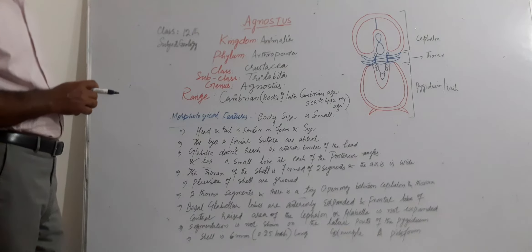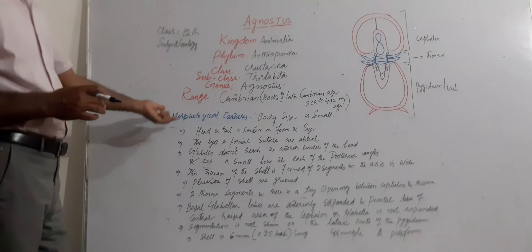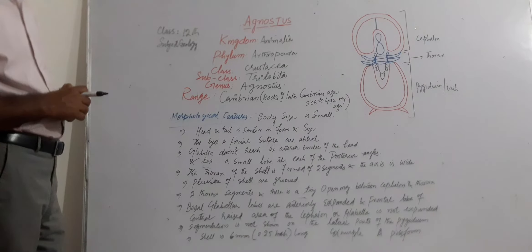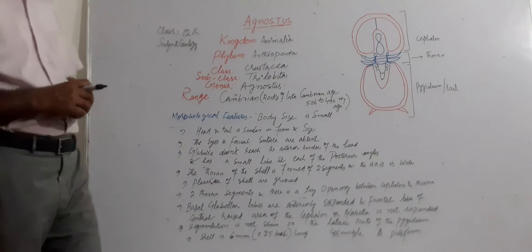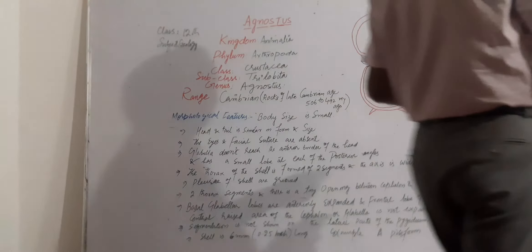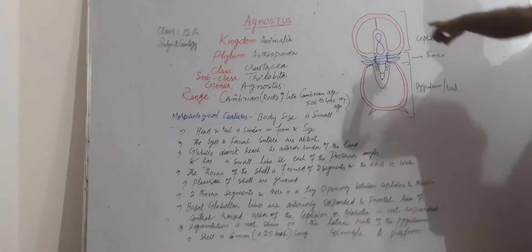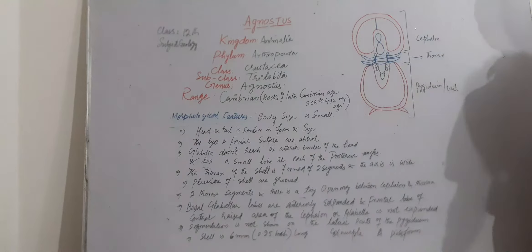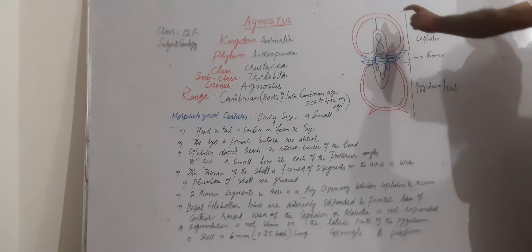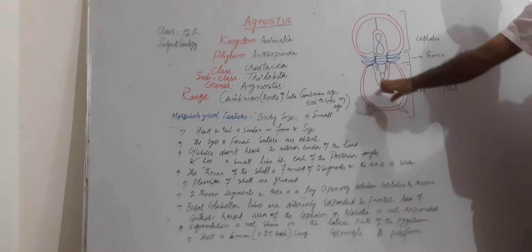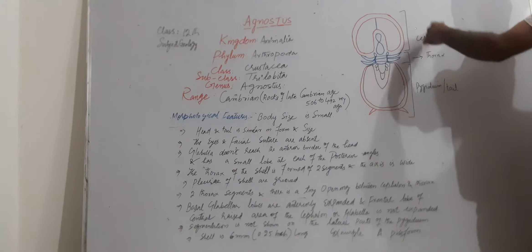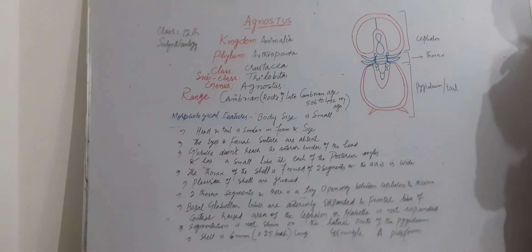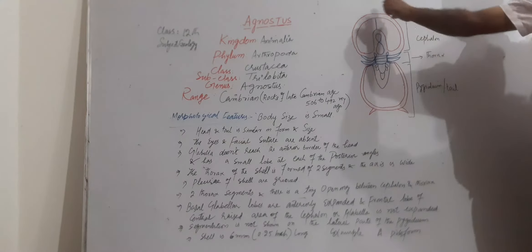The morphological features of this shell are: the body size of the whole fossil is very small. When we see the head part and the tail part, they are similar in form and also same or similar in size.